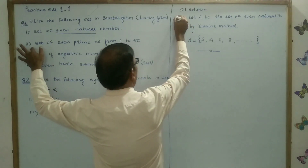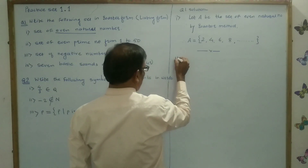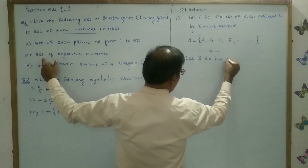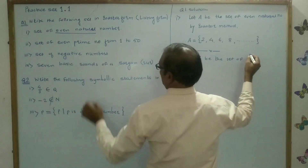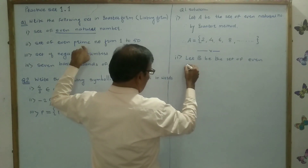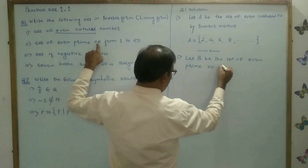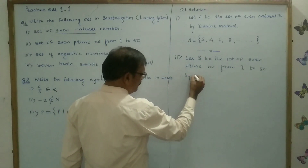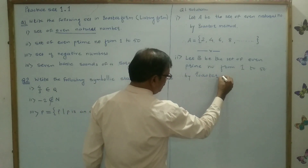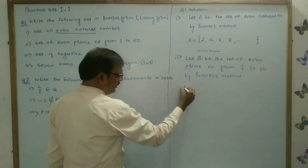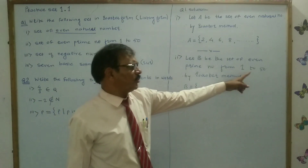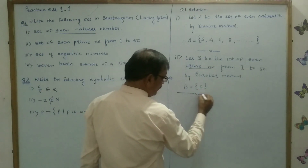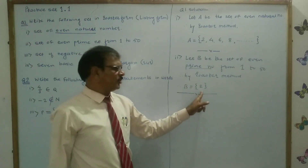Now this is the first. Second: let B be the set of even prime numbers from 1 to 50. By roster form, therefore set B from 1 to 50: here there is only one even prime number, which is 2. Therefore B is equal to {2}. Even prime number 2 is the answer.